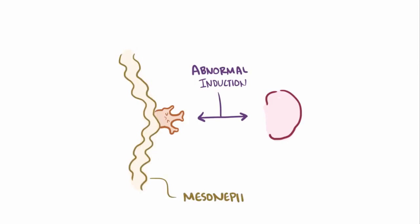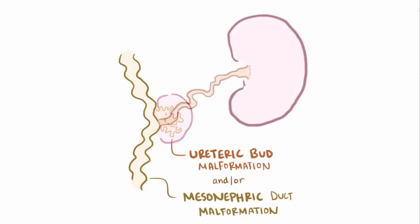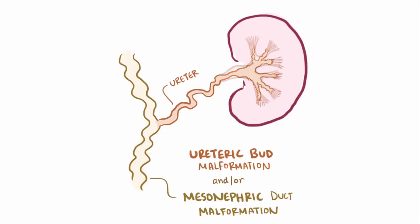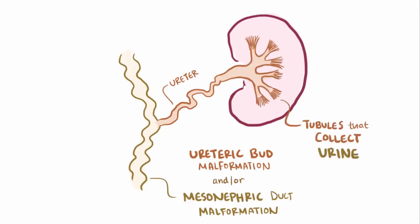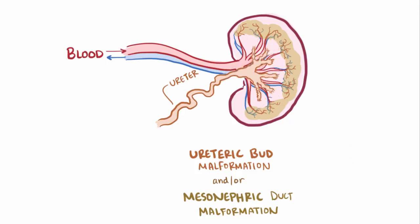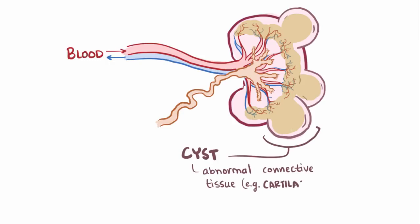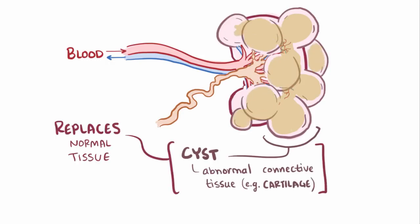This failure might be the fault of the mesonephric duct not forming right, or the ureteric bud not forming right, or both. Regardless of the cause, the ureteric bud is supposed to form the ureters as well as the tubules that branch out to collect urine. As blood starts coming in to be filtered and urine starts getting produced, a failure to properly develop into these urine-collecting tubules means the urine has nowhere to go, and so it builds up in the kidneys and forms fluid-filled cysts composed of abnormal connective tissue, especially cartilage, that replaces normal kidney tissue and decreases the kidney's ability to function.